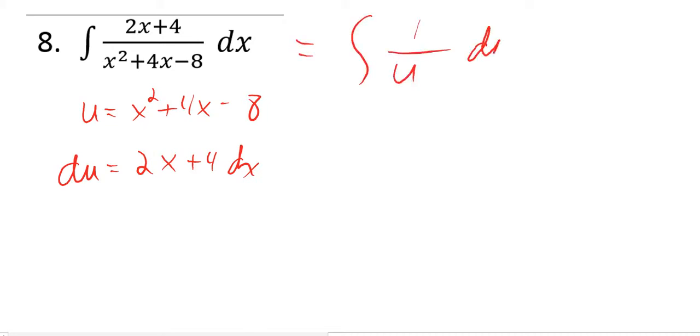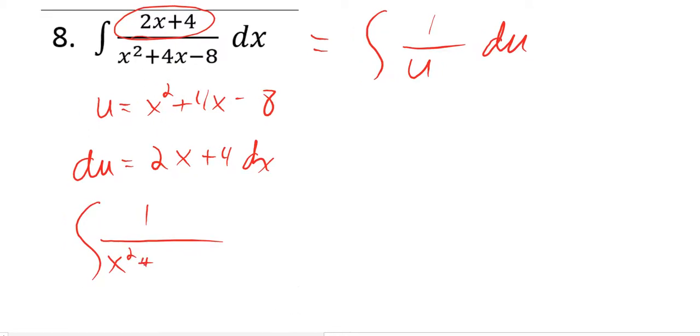Wait, what's wrong, because this is up here? So that right there is the same thing, as remember with fractions, that's the same thing as 1 over x squared plus 4x minus 8 times 2x plus 4 dx. That's the same thing. The fraction numerator is the same thing as just multiplying by it on the side.